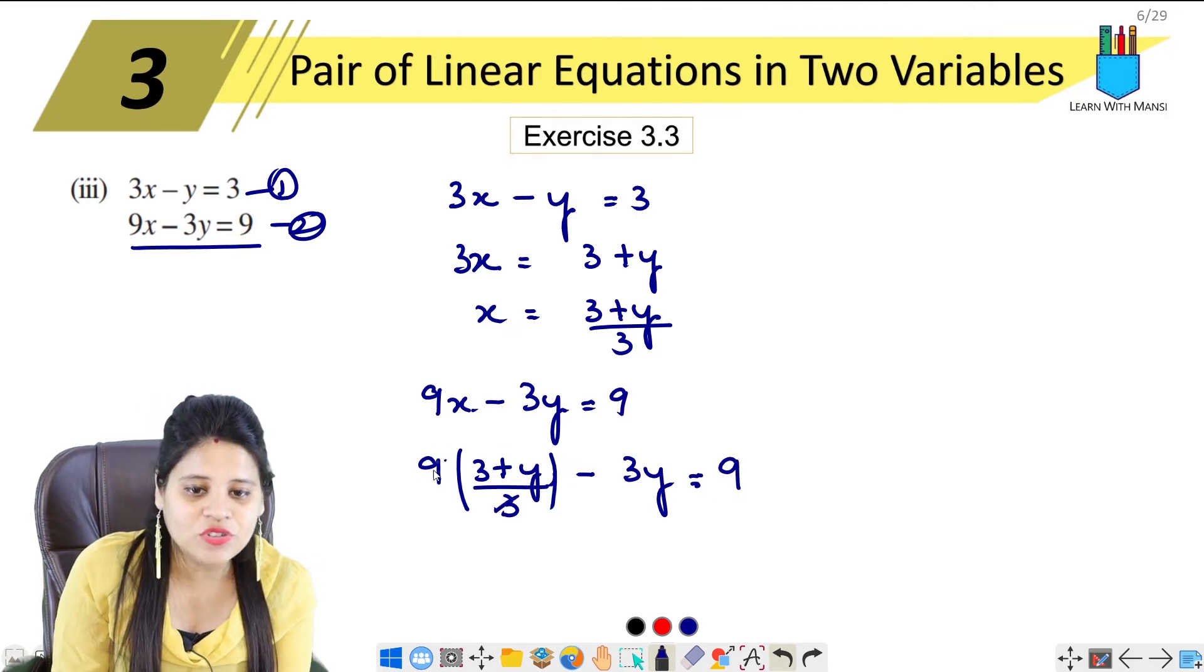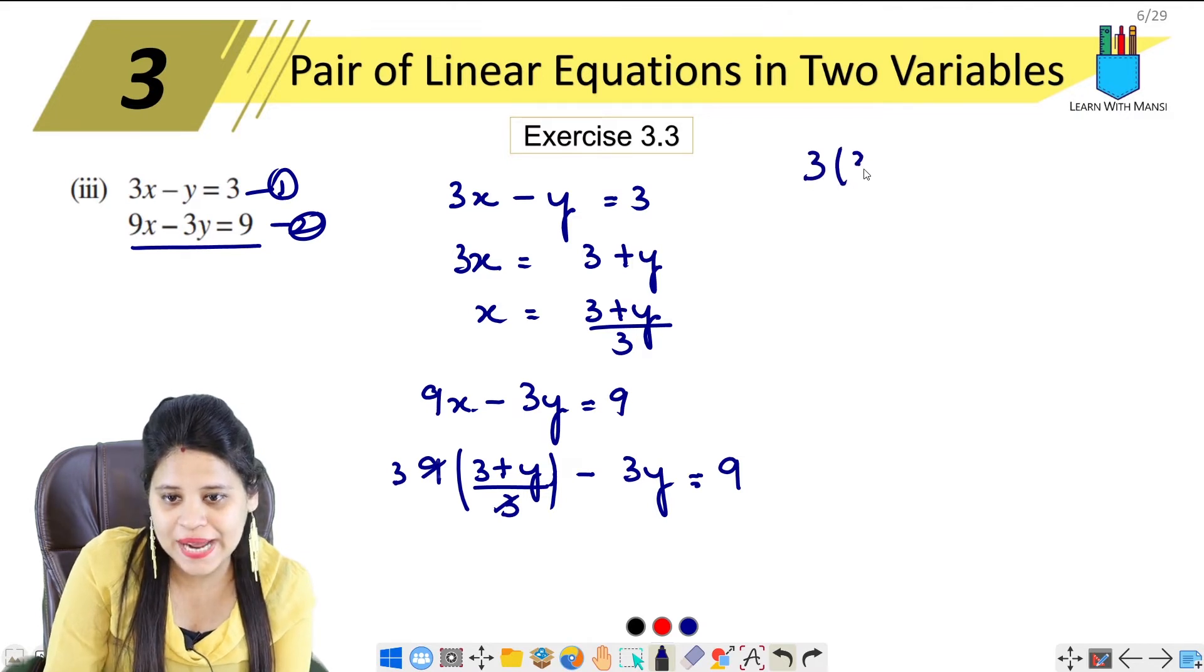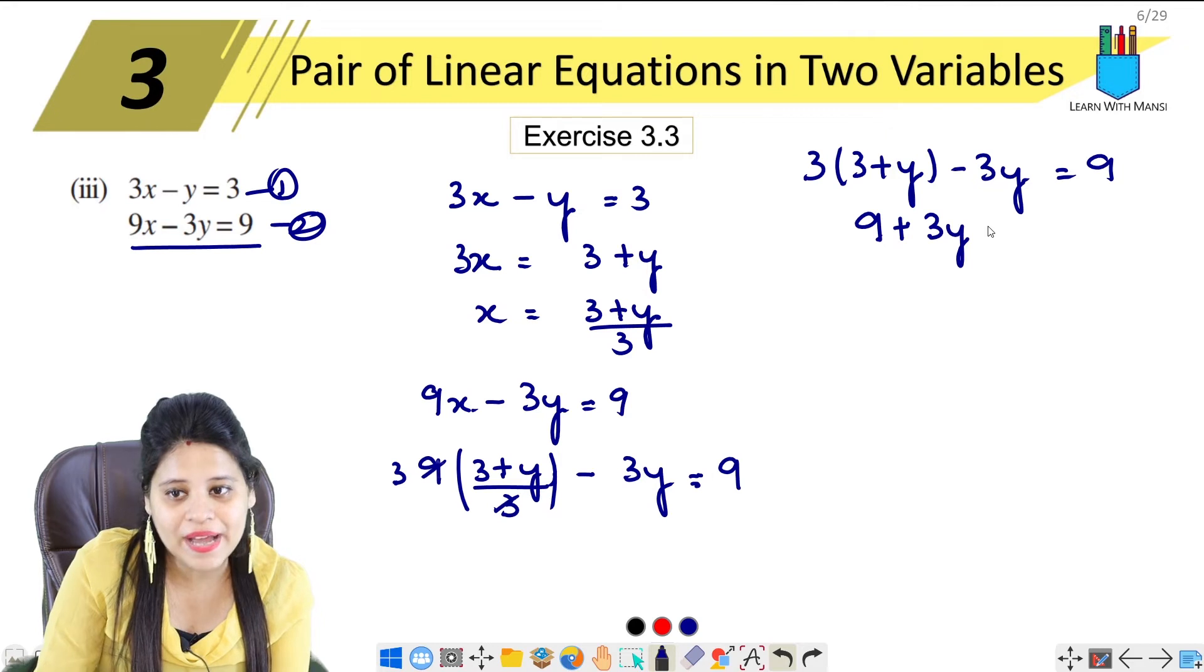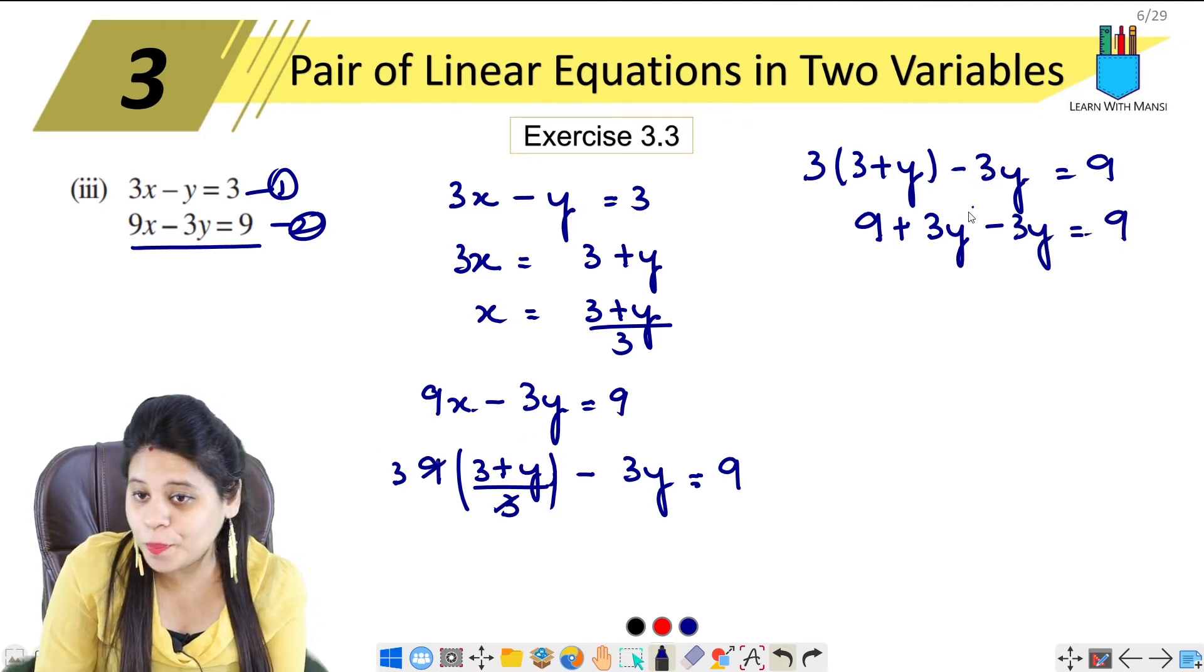So 3 times 1 is 3, 3 times 3 is 9. So we get 3 bracket 3 plus y minus 3y equals 9. So 3 times 3 is 9 plus 3 into y, 3y minus 3y equals 9.